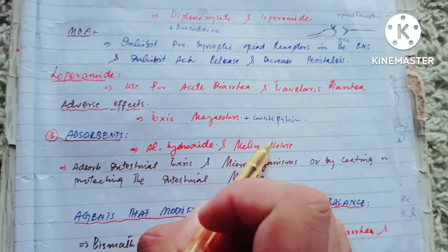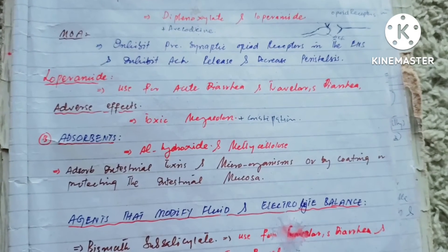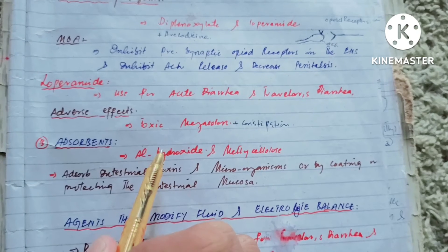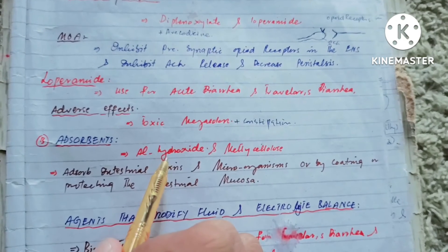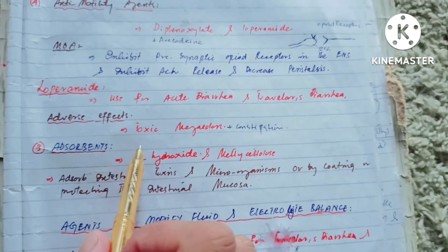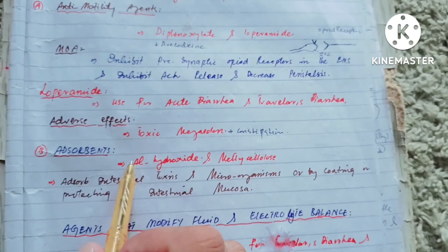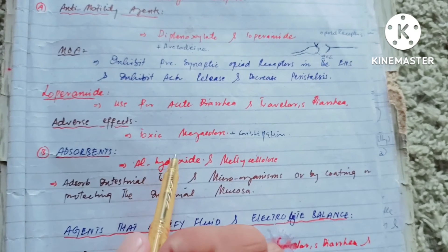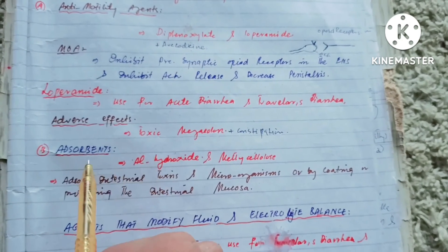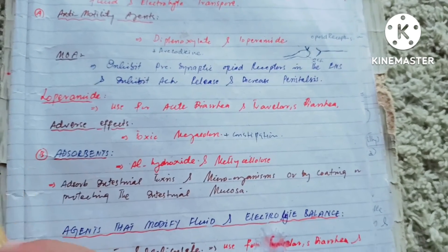Another approach to controlling diarrhea is the use of adsorbents. These include aluminum hydroxide and methylcellulose. Aluminum hydroxide and methylcellulose absorb toxins and microorganisms through their surface. They also coat the GI mucosa, so when the GI mucosa is coated, there is no direct contact of microorganisms with the GI tract, and thus diarrhea is controlled.